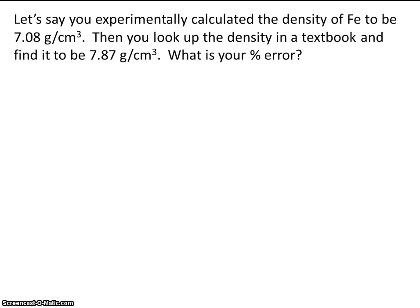Let's do one quick example. Let's say you experimentally calculated the density of iron to be 7.08 grams per centimeter cubed. So this is your experimental value. Then you looked up the density in a textbook, and you find it to be 7.87 grams per centimeter cubed.